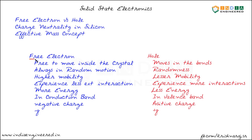The conduction band electron we may call it a free electron because it is free in the sense that it is able to move inside the crystal freely. We cannot say that the free electron is associated to a particular atom — it is free to move inside the crystal. Hole movement is considered to be occurring in the valence band, that is in the bonds.